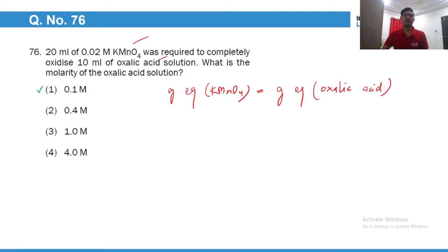Now the n factor of KMnO4 is 5 because it goes from plus 7 to plus 2, whereas the n factor of oxalic acid is 2 because each carbon atom goes from plus 3 to plus 4. Now gram equivalents is normality multiplied by volume. So normality multiplied by volume of KMnO4 is equal to normality multiplied by volume of oxalic acid. Normality itself is molarity multiplied by n factor. So n factor is 5 and molarity of KMnO4 is 0.02 multiplied by its volume 20 ml equals for oxalic acid n factor is 2, molarity we have to find out, and the volume is 10 ml. So of course this will cancel out and molarity would come out to be 0.1.